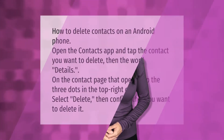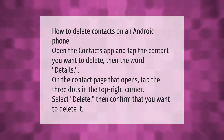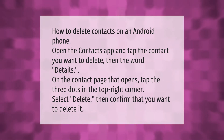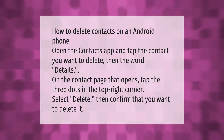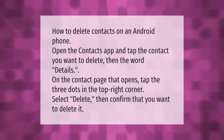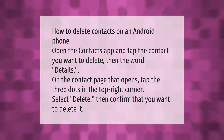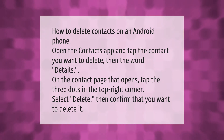How to delete contacts on an Android phone: open the contacts app and tap the contact you want to delete. Then tap the word 'details' on the contact page that opens. Tap the three dots in the top right corner, select delete, then confirm that you want to delete it.